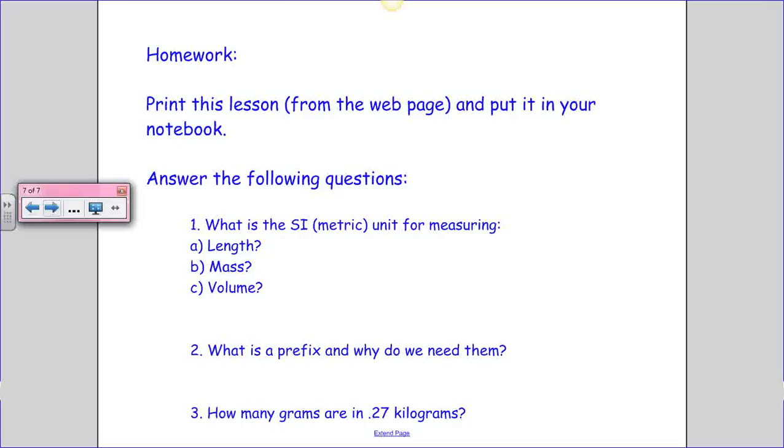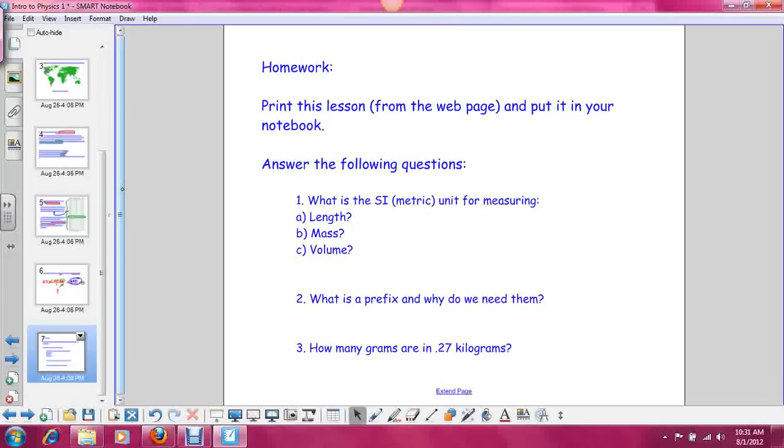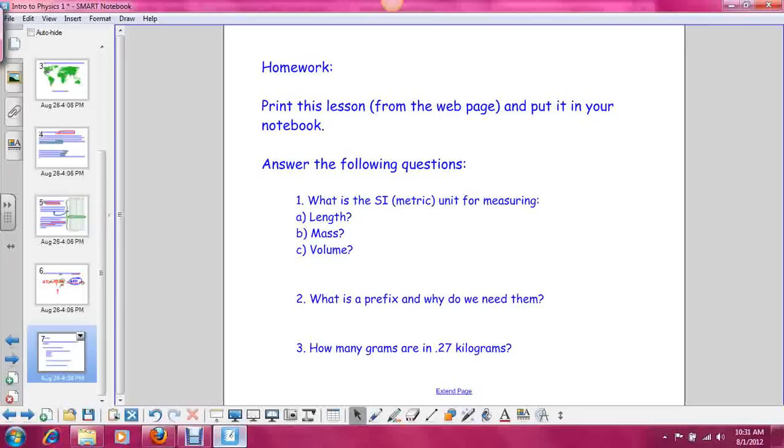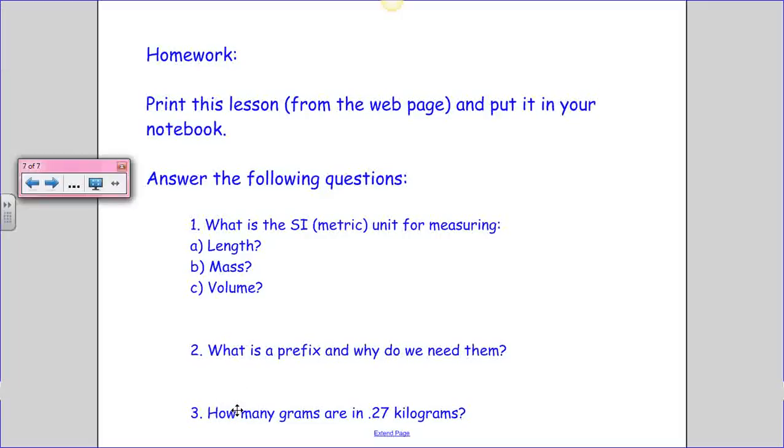So your homework for this lesson is to print this lesson from the web page. Remember that page right here? Introduction to physics or what is physics and why do I care? You need to print this page out and put it in your notes. After you've done that, answer these following questions: What is the SI or metric unit for measuring length, mass, and volume? What is a prefix and why do we need them? And how many grams are in 0.27 kilograms? You need to write these down on a piece of paper with your name on it and be ready to turn them in the next time that I see you.